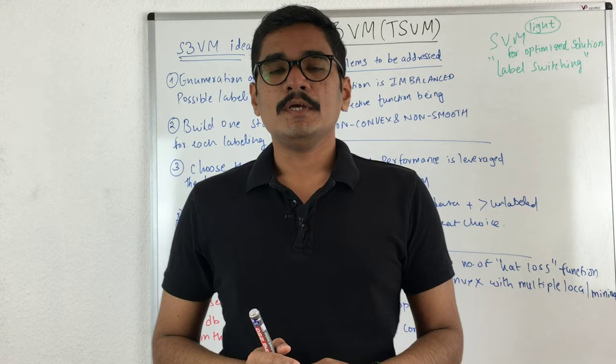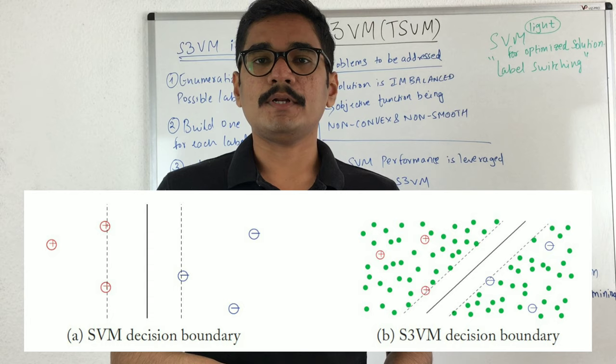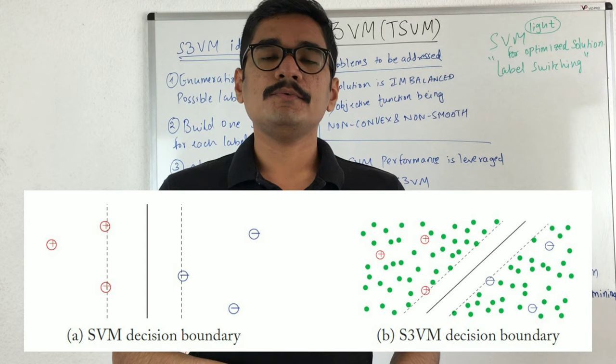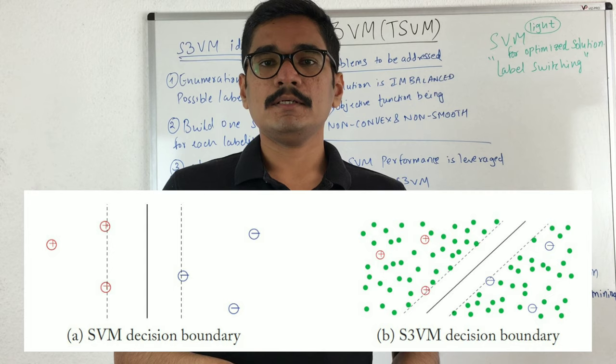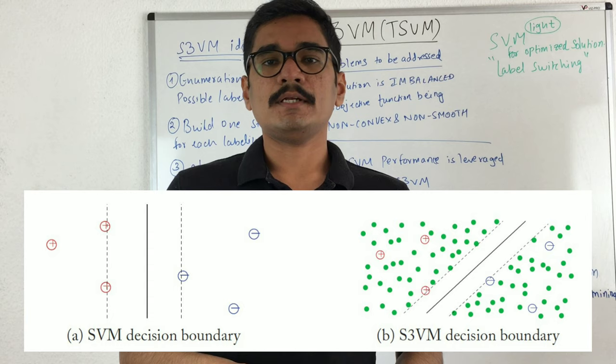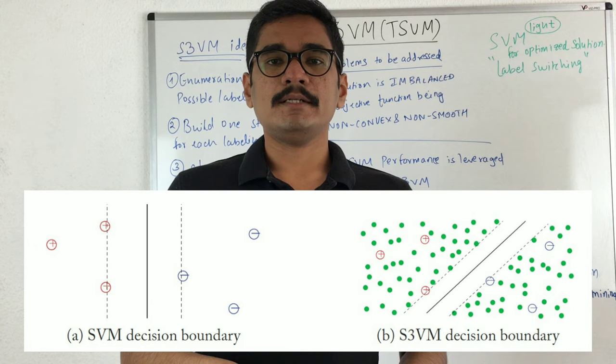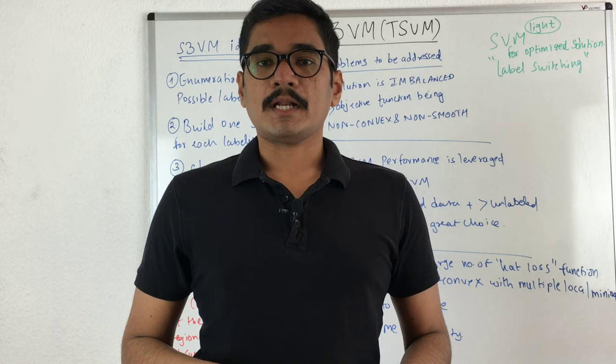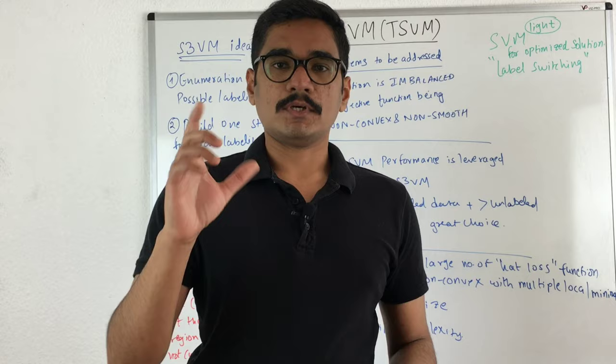For that purpose you can see a diagram showing the comparison between a decision boundary of an SVM and an S3VM. For S3VM, there is a solid line passing in between and two dotted lines on the left and right side. The distance between the solid line and the dotted lines is called the geometric margin. S3VM essentially tries to maximize this distance between the solid line — your hyperplane — and the dotted lines.